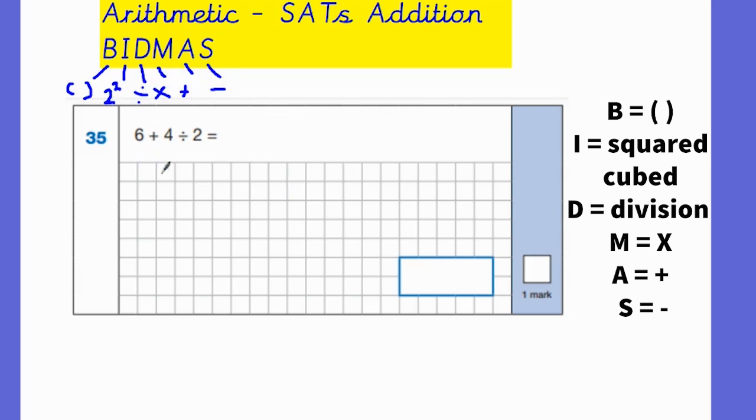Looking at this question, which part do you think we need to do first? Well, according to BIDMAS, we're not going to do the addition first because that's the penultimate thing. We're going to do division first. So we're going to do 4 divided by 2, which is 2. Then I'm going to do the addition, 6 add 2, which is 8. So the correct answer for this question was 8.